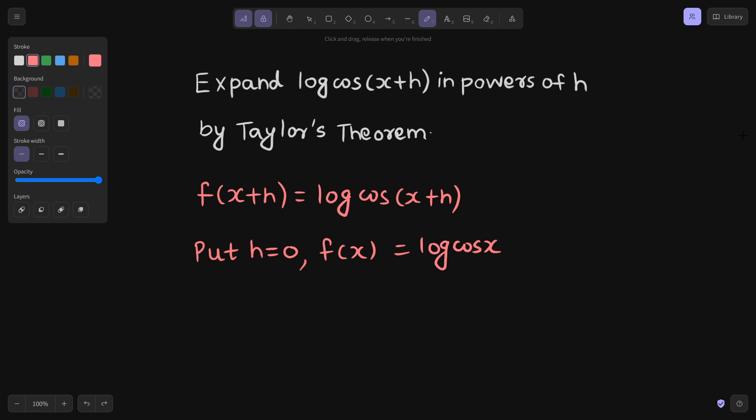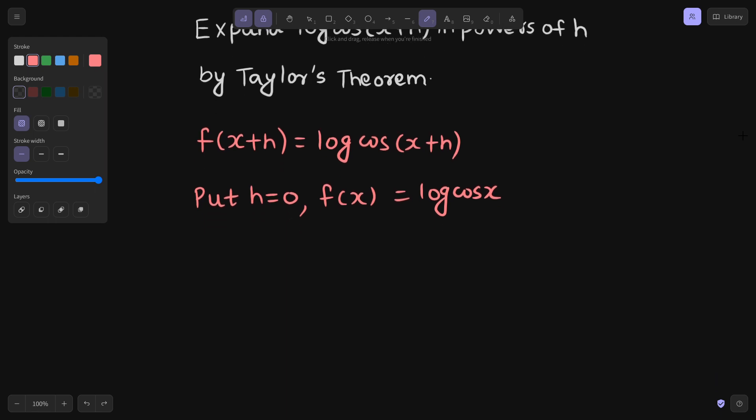Now we have to just differentiate f(x) 2 to 3 times. So your f'(x) will be derivative of log cos(x). So that will be 1 upon cos(x) times derivative of cos(x) is negative sin(x). So this will be nothing but negative tan(x).